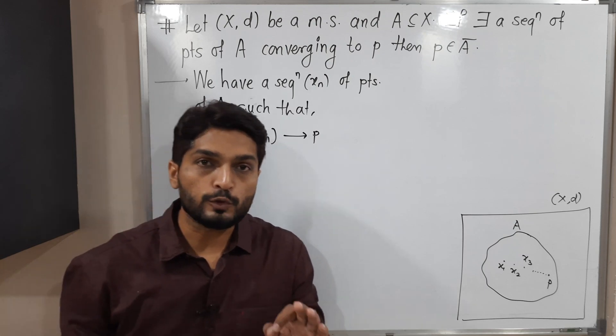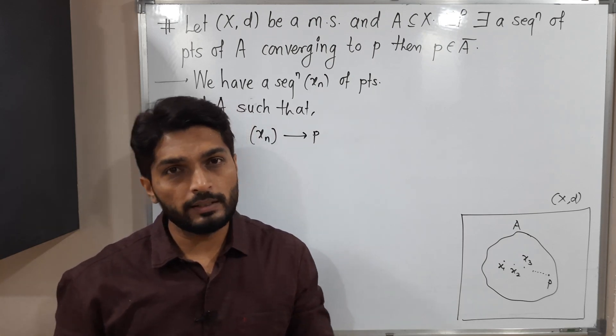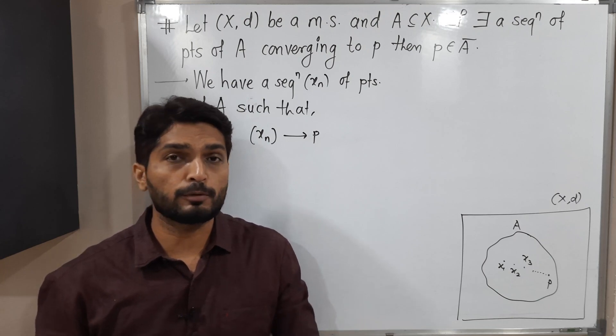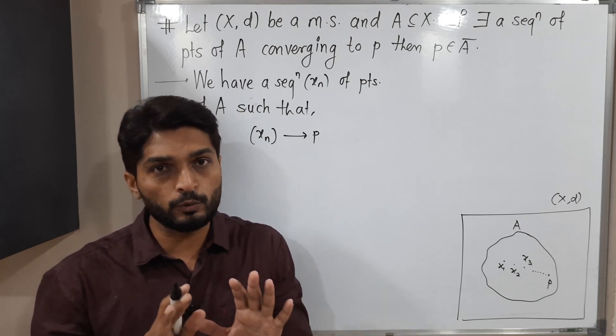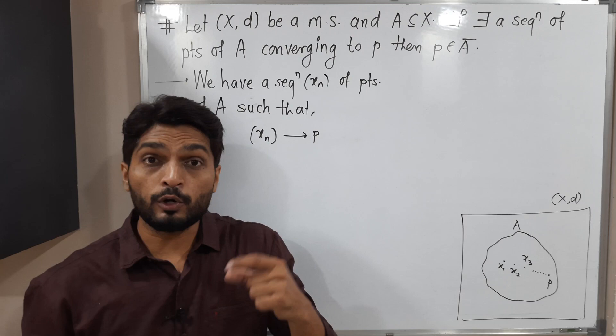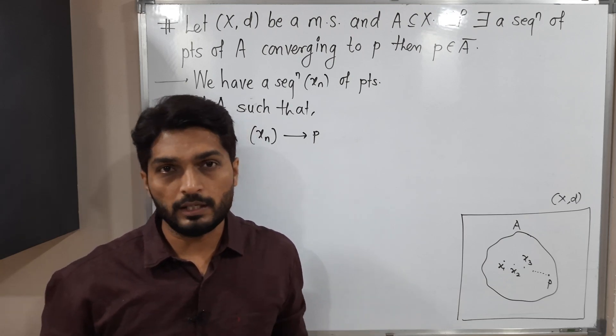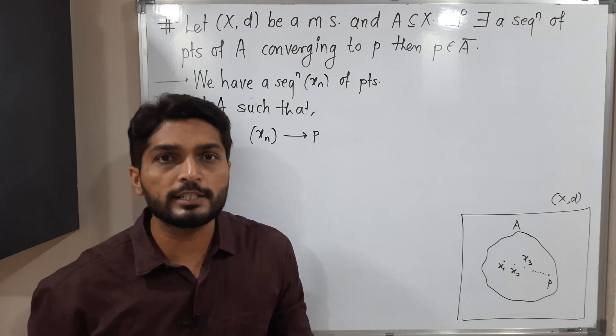So we are familiar with the definition of a convergent sequence. For given epsilon, there exists n belonging to the set of natural numbers and so on. I am going to use that definition here. But instead of epsilon, I will take R. Epsilon is a positive real number, so R is also a positive real number I am taking.